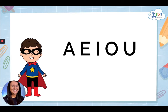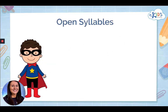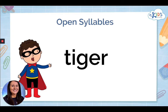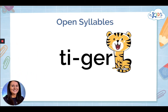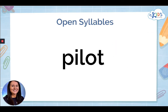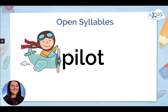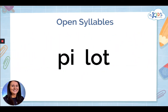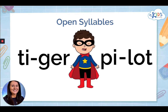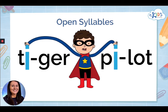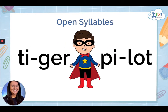First, let's talk about open syllables. The first syllables in both of those words are open because they end with a vowel. Open syllables often have long vowel sounds.